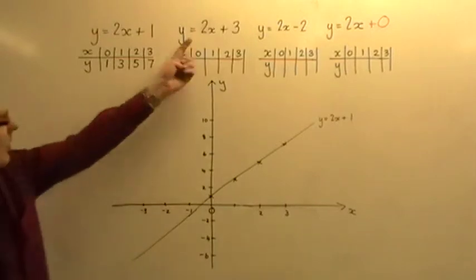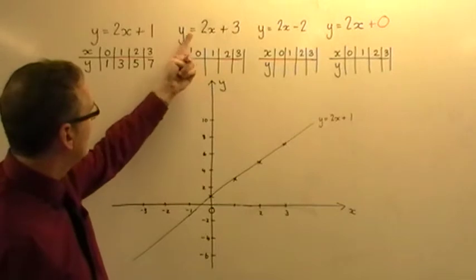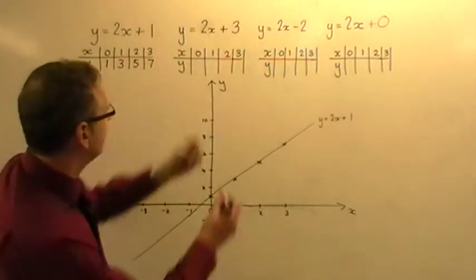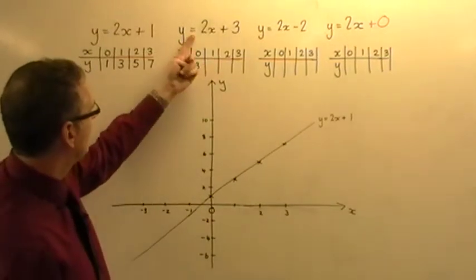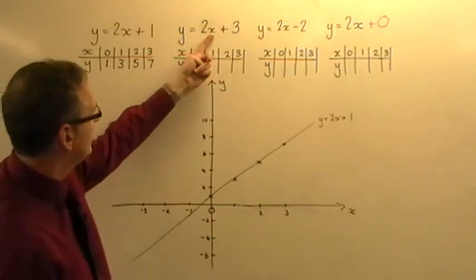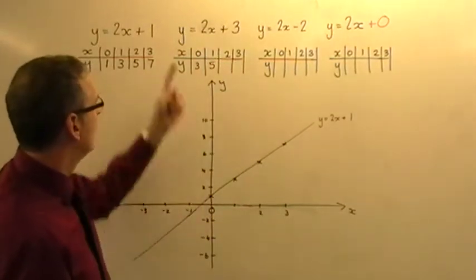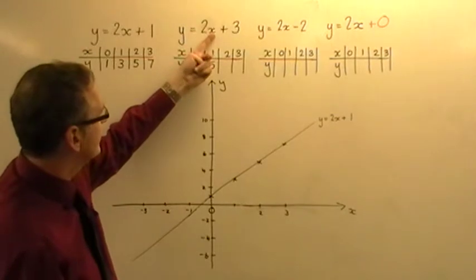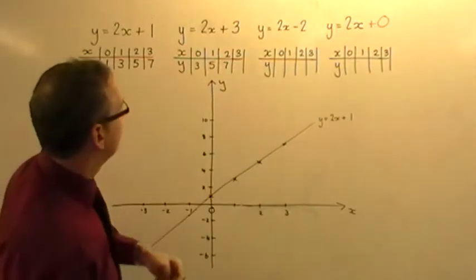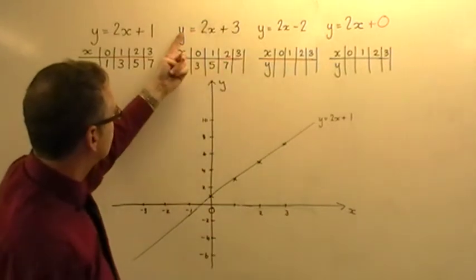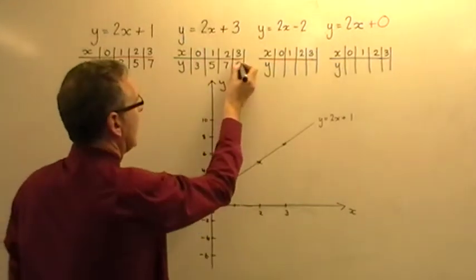Let's do the second one, y equals 2x plus 3 now. If x is nothing, y will be 2 times nothing is nothing, add 3, gives 3. If x is 1, y will be 2 times 1 is 2, add 3, you get 5. If x is 2, y will be 2 times 2 is 4, plus 3, you get 7. And if x is 3, the y value will be 2 times 3 is 6, add 3, you get 9.